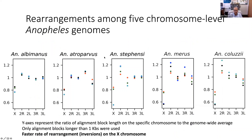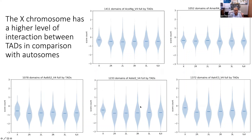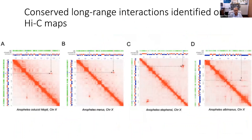We were interested in rearrangements, and confirmed the previous finding that the X chromosome has a faster rate of rearrangement. We found that the X chromosome has less insulation between TADs, indicating that there is more interaction between different TADs in the X chromosome — in agreement with its higher compaction rate.